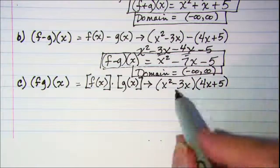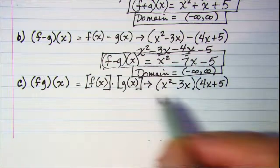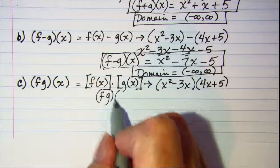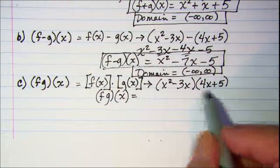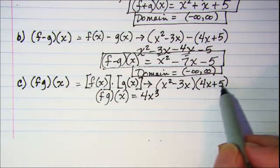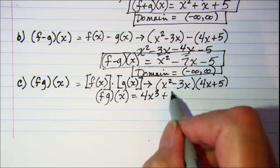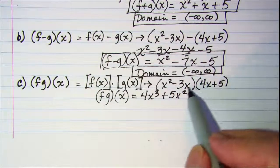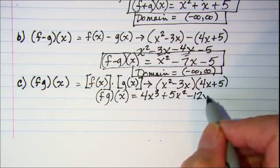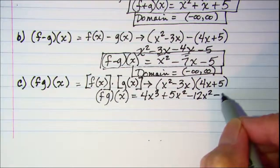We'll use FOIL on this so x squared times 4x is 4x cubed and then the outer product is x squared times 5. And then the inner product is negative 3x times 4x and then the last ones multiply together and give me a negative 15x.